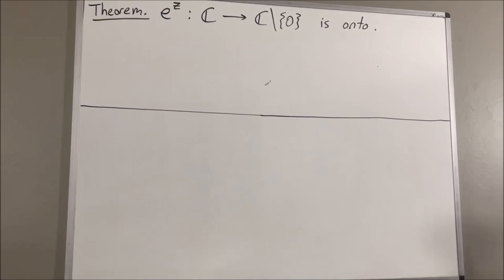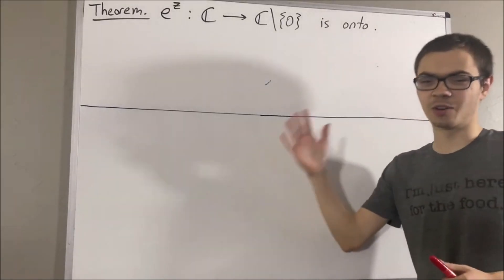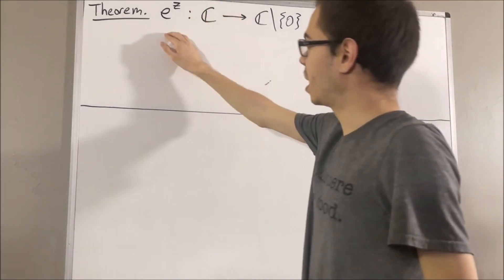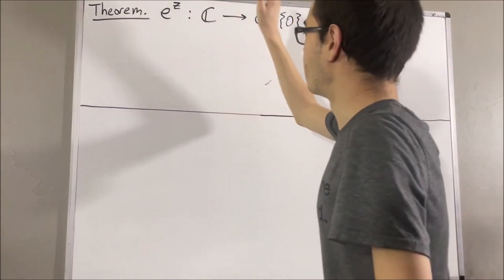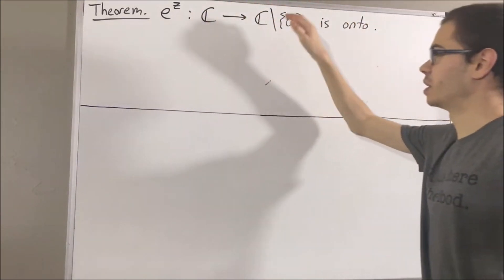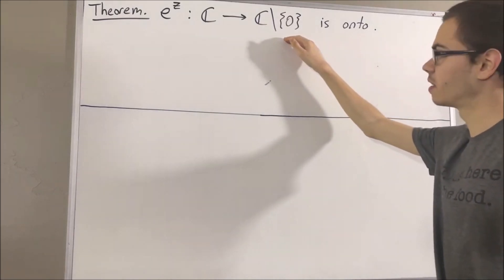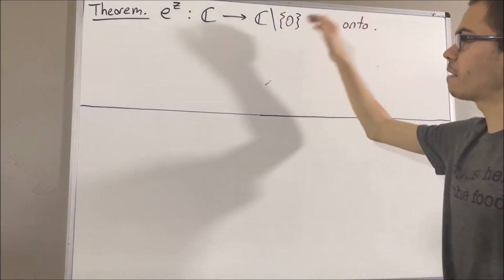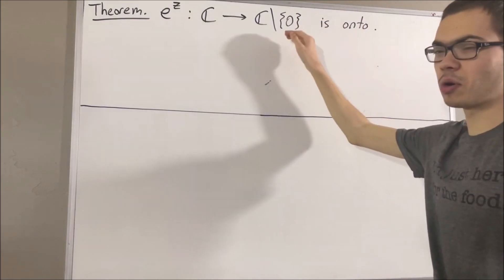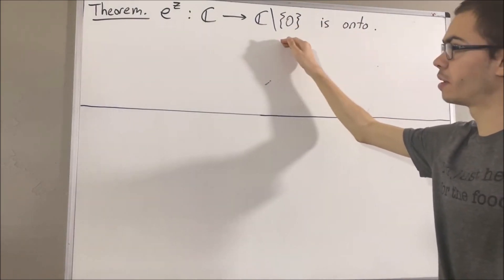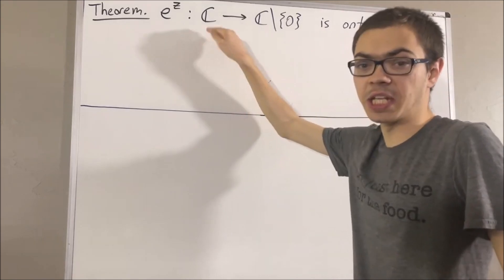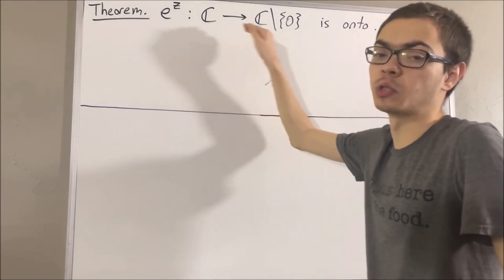Hello! In this video, we are going to prove the following theorem: the complex exponential function maps onto the non-zero complex numbers. So really, we're trying to prove that for every non-zero complex number w, there exists a complex number z such that e to the z is equal to w.